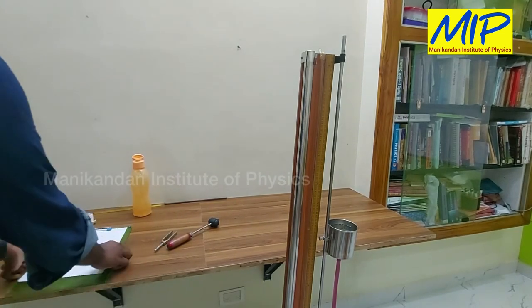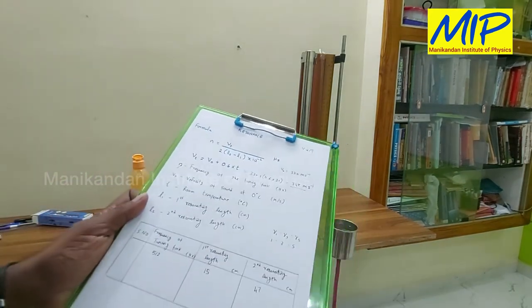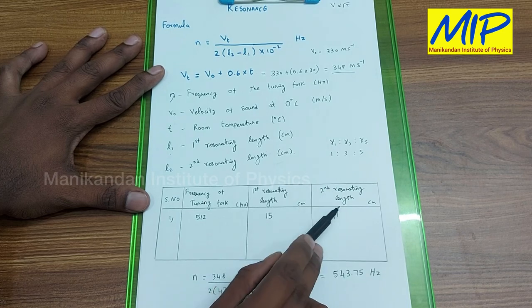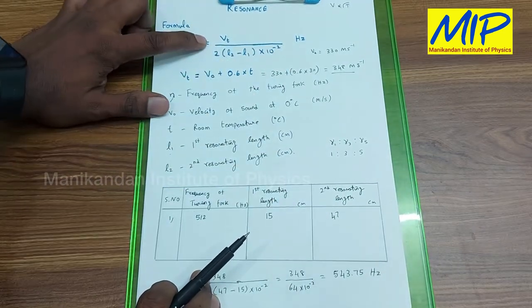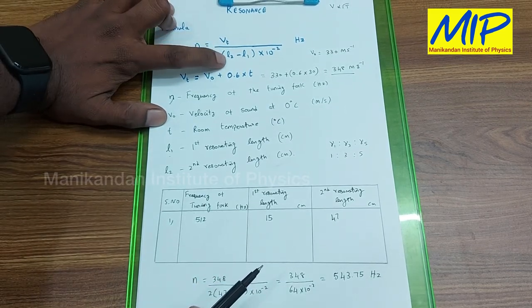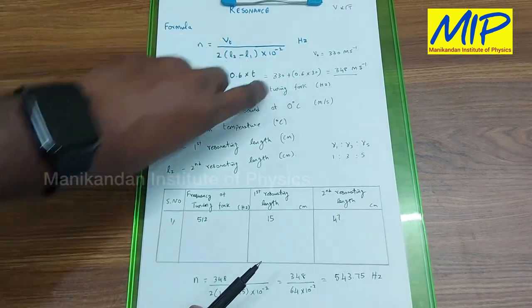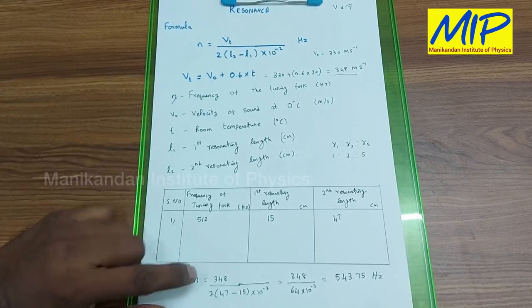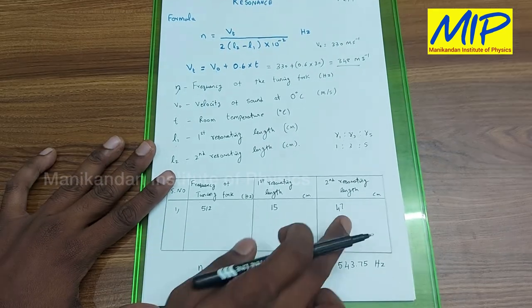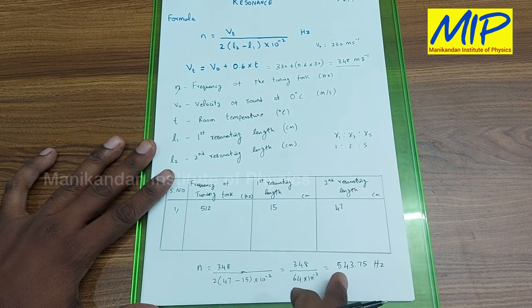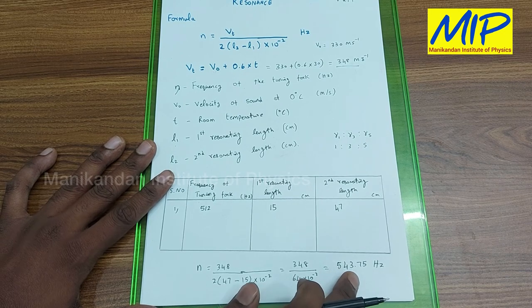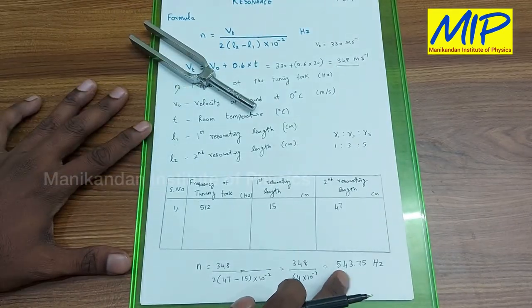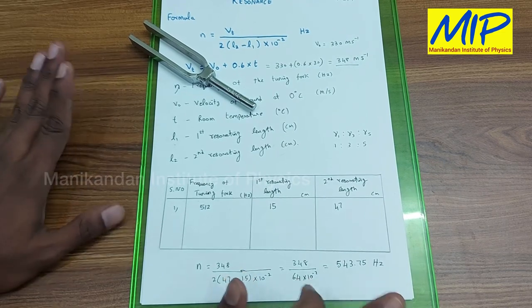Using L1 and L2 we are able to calculate the frequency of the given tuning fork. The first resonating length is 15 cm and the second is 47 cm. Substituting into N = VT / (2 × (L2 − L1) × 10^−2): VT is 348 meters per second, so N = 348 / (2 × (47 − 15) × 10^−2) = 348 / (2 × 32 × 10^−2). This gives 543.75 hertz. My actual value of this tuning fork frequency is 512 hertz, so 543.75 hertz is nearly equal to the original value.